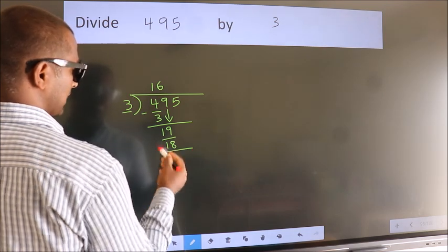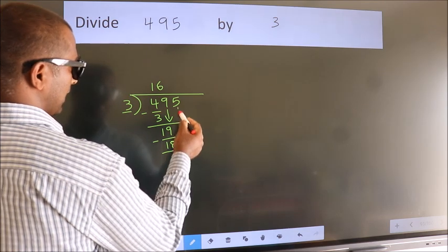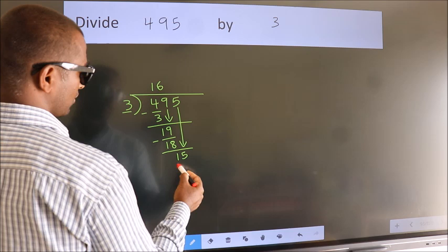Now, we subtract. We get 1. After this, bring down the beside number. So, 5 down. So, 15.